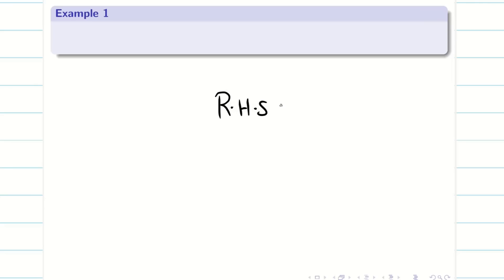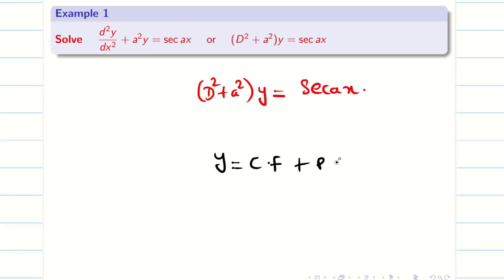Only the change is going to happen in the RHS. If my RHS is going to be secant Ax, what would be the solution? Similarly, the second problem I am going to take, RHS is going to be cosecant Ax. Let us go into the problem. So, a given problem d² + a² into y is equal to secant Ax. You want to find the solution.